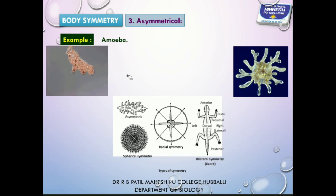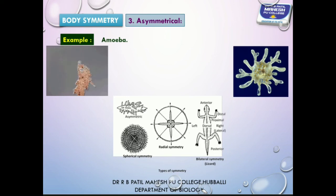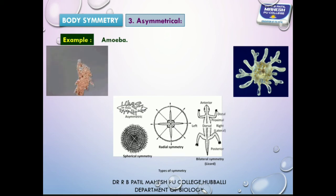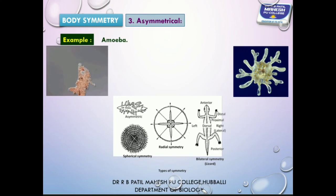Based on germ layers, animals are classified into different groups — one is diploblastic and another is triploblastic. Diploblastic animals are placed in one group and triploblastic animals in another. How this classification is done will be discussed in the next session.